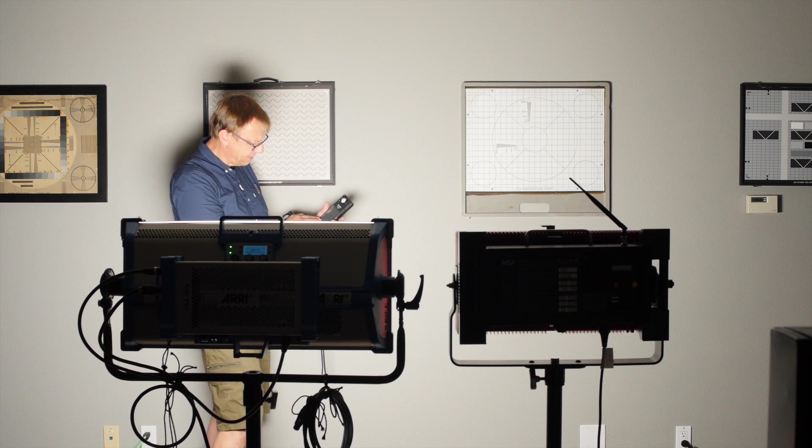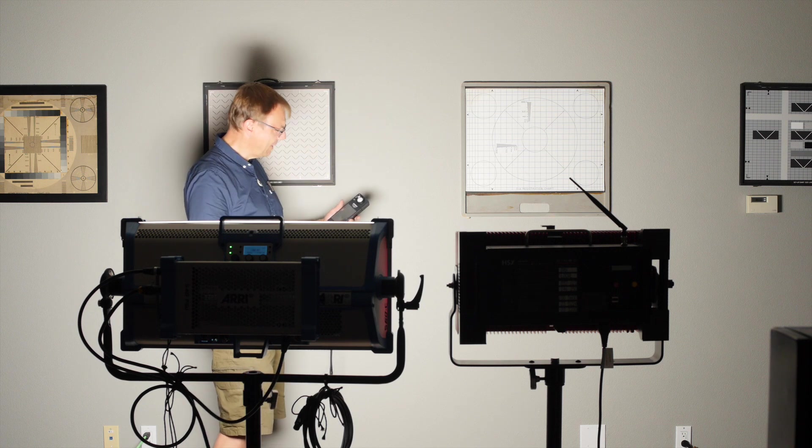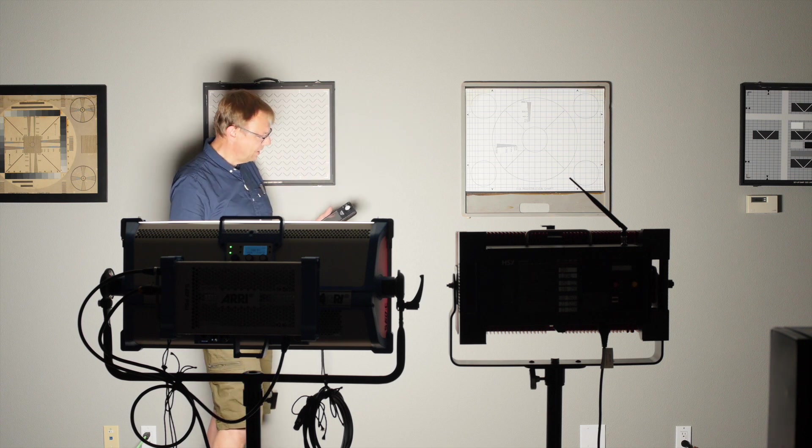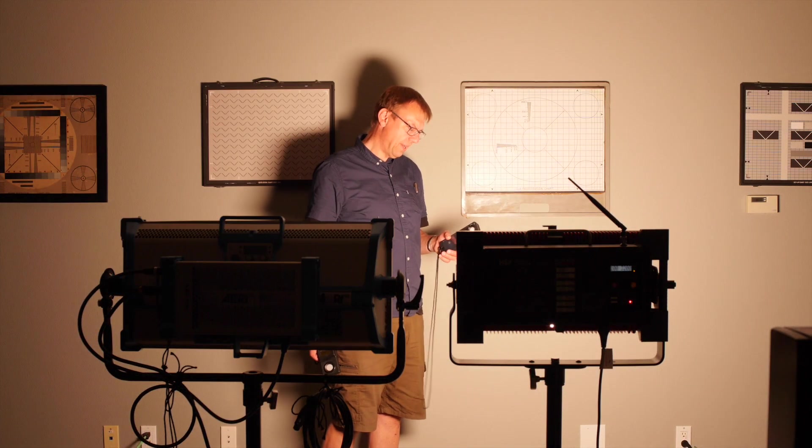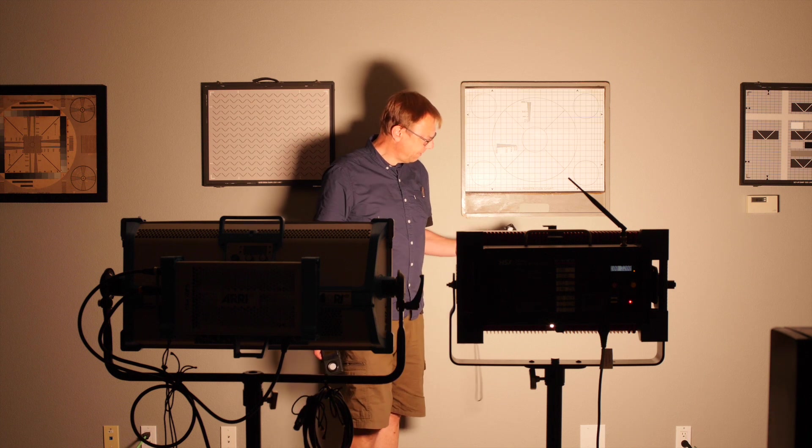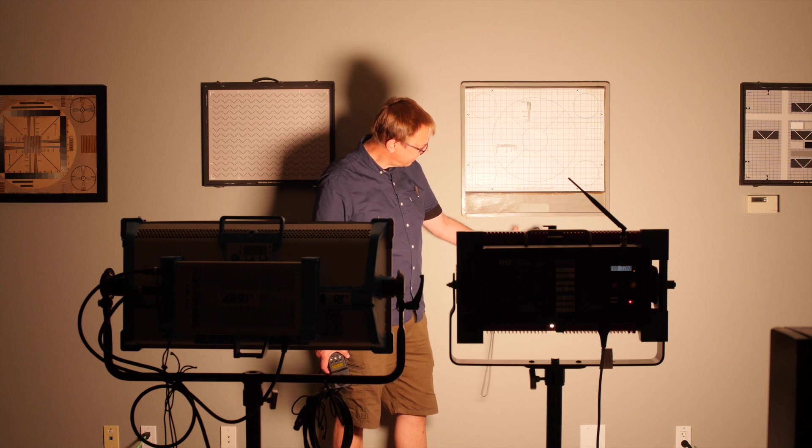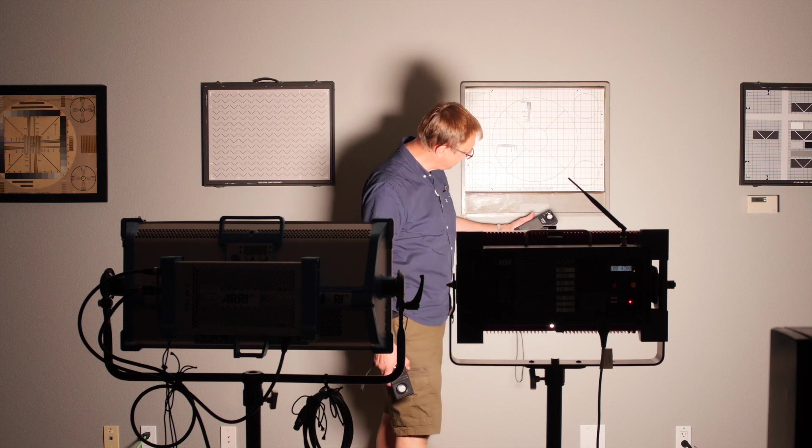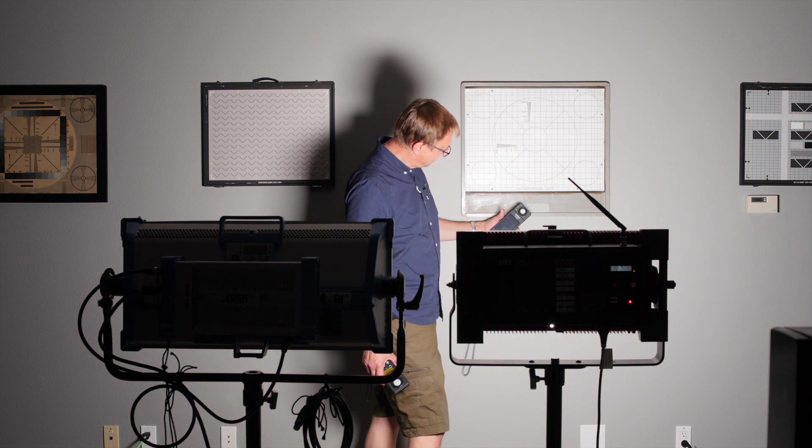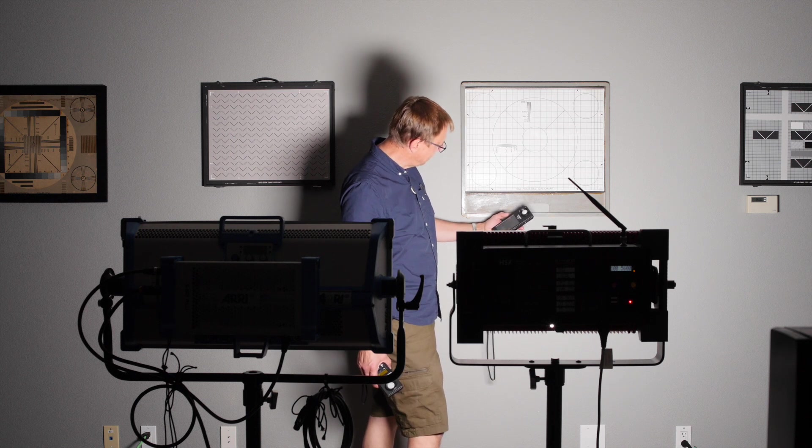Now we'll also look at the difference of the spectrum that comes out of the SkyPanel and the spectrum that comes out of the HSX. So let's go to the HSX. Now here's the HSX at 3,200, full intensity. So what do we have here? 3,267. 4,300 - so 4,280. And this is 5,600 - we got 5,550. So there you go.